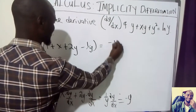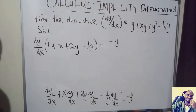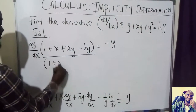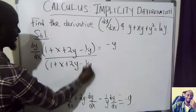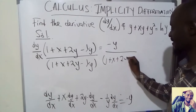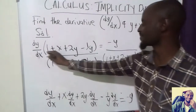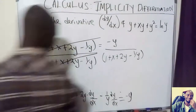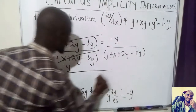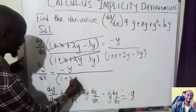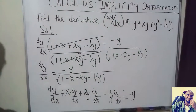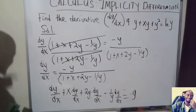This is equal to minus y. Now I divide both sides by the bracketed expression to isolate dy over dx. So what we get is dy over dx equals minus y divided by 1 plus x plus 2y minus 1 over y. This is our derivative, dy over dx.